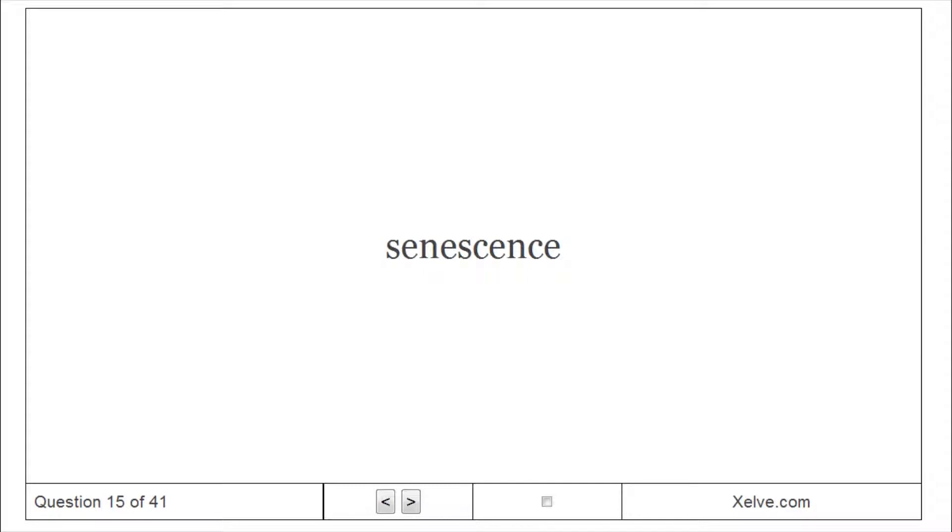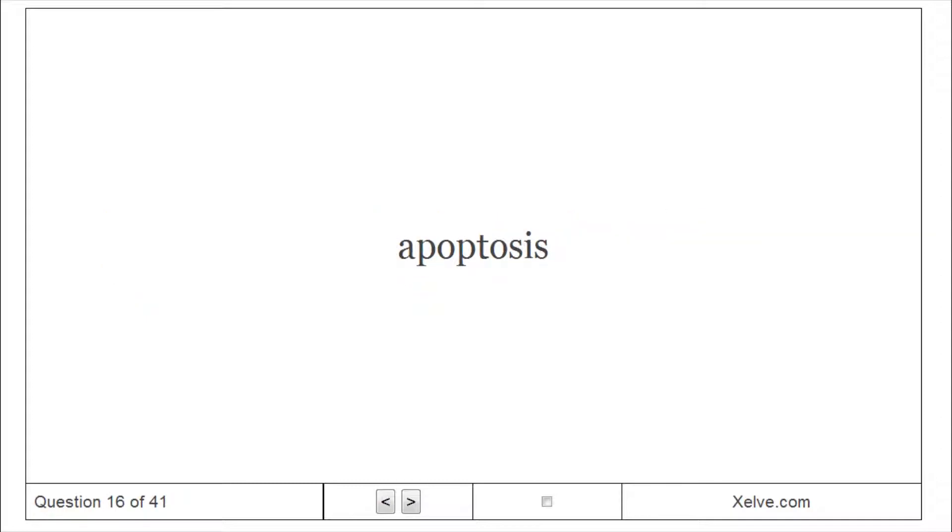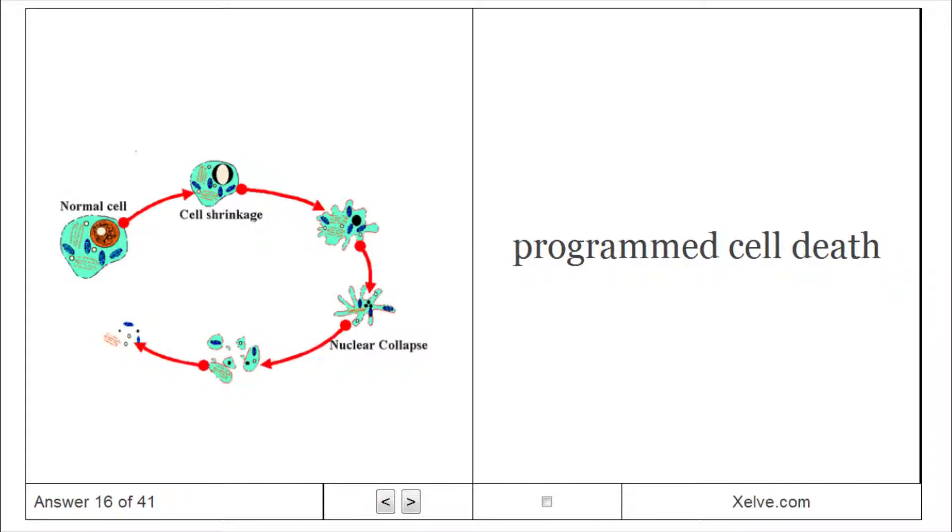Senescence: the programmed death of certain cells or organs or the entire plant. Apoptosis: programmed cell death.